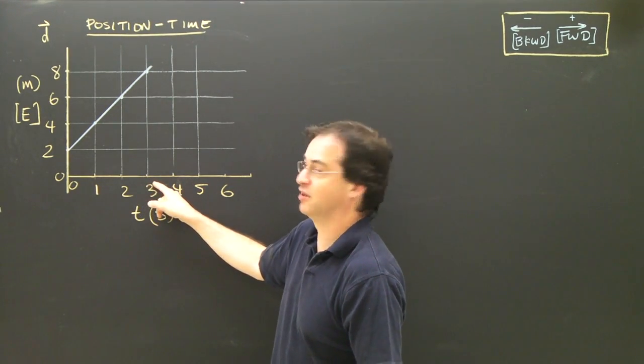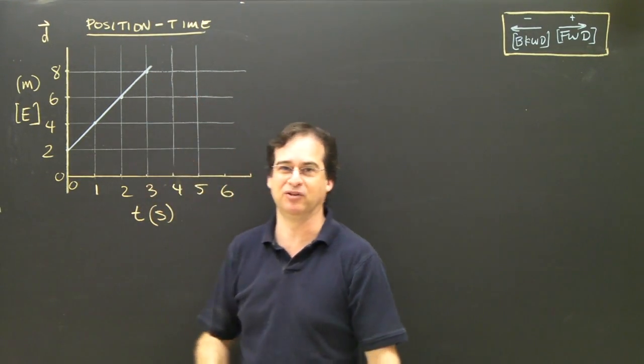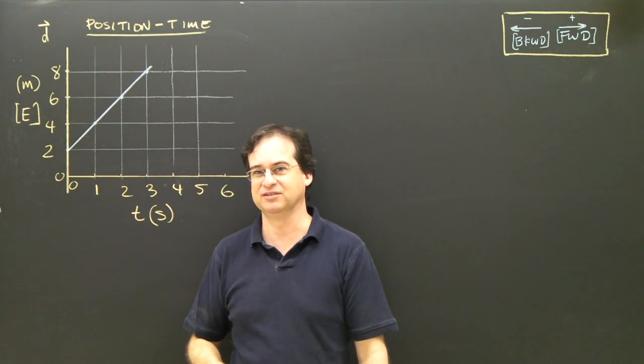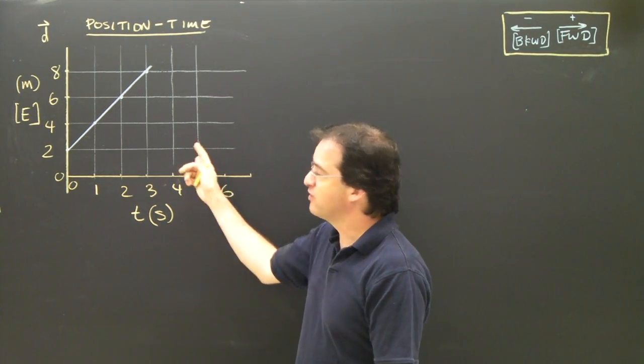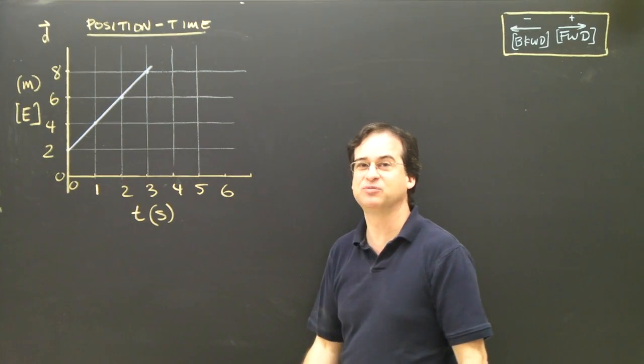And if I look at 3 seconds, the numbers are telling me at 3 seconds, I'm at 8 meters, so I'm over there even more distance. Okay, well, one of the things we do with a position time graph is we take the slope.